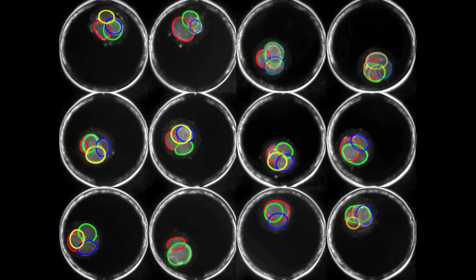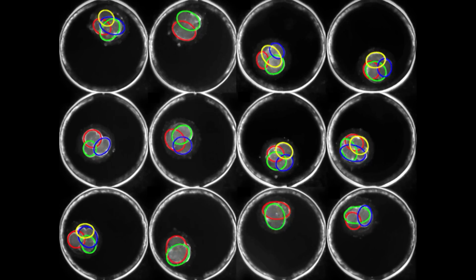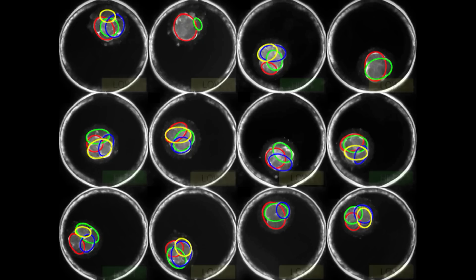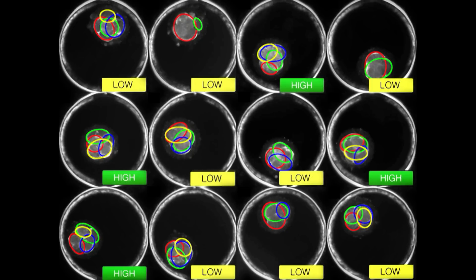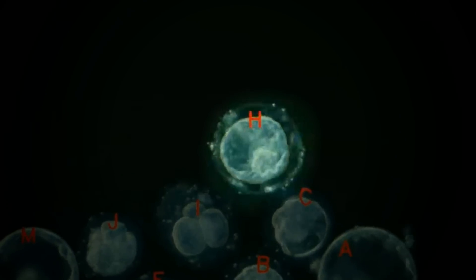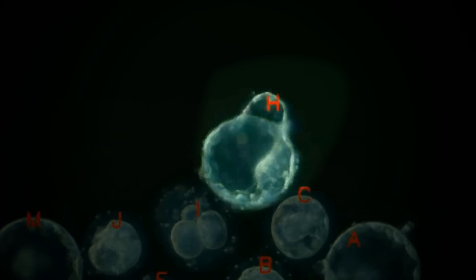Embryos that go from two to three cells in nine to eleven hours, and then from three to four cells in under two hours, have the best chance of making it to day five. A critical milestone. Because on day five, the embryo gets ready to break out of its shell and attach to the uterus.